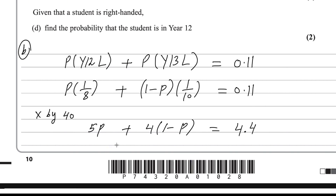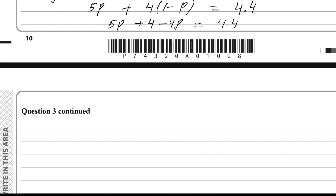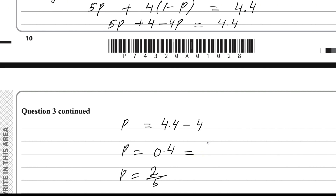Solving for P: 5P + 4 − 4P = 4.4, so P = 4.4 − 4 = 0.4. You can write this in fraction form as 4 over 10, which simplifies to 2 over 5. So P = 2/5 is the answer for part B.